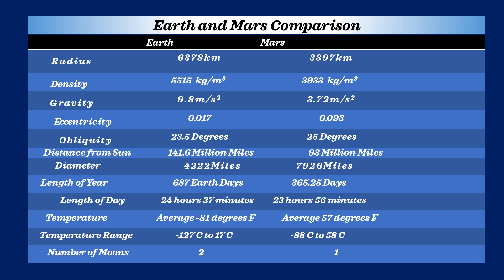Here we compare Earth with Mars. Look at column 1: the words radius, density, gravity, eccentricity, obliquity, distance from sun, diameter, length of year, length of day, temperature, and temperature range. Now look at column 2 and column 3. Column 2 is that of Earth, and column 3 is that of Mars. You will find the difference very clearly.